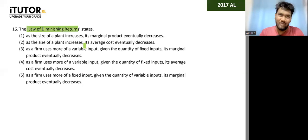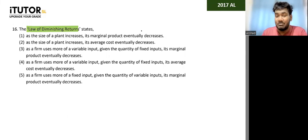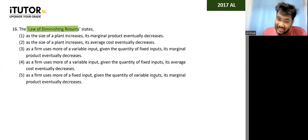What does the law of diminishing returns state? I want all of you to give me an answer. As the size of a plant increases — and plant means factory, not a tree, it means your production facility — marginal product eventually decreases. As the size of the plant increases, average cost eventually decreases. As the firm uses more of variable input given the quantity of fixed input, marginal product eventually decreases.